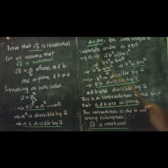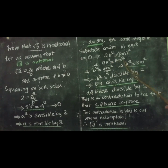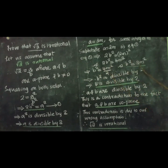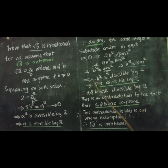Substitute a equal to 2m in equation 1: 2b squared equal to a squared becomes 2b squared equal to 2m whole squared, that is 2b squared equal to 4m squared. Taking 2 to the right side, we get b squared equal to 4m squared by 2, that is b squared equal to 2m squared. Again, we got b squared is 2 into another number. So we can write b squared is divisible by 2. If b squared is divisible by 2, then b is also divisible by 2 by theorem 1.3.